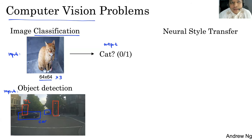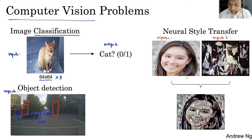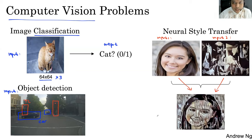Ada juga problem lainnya di computer vision: kita ada sebuah image sebagai input pertama, terus input kedua adalah style-nya. Keduanya digabungkan sehingga kita bisa bikin image dengan style yang ada. Itu adalah neural style transfer. Kalau dalam sequence analysis itu bisa juga untuk generate music, compose music. Jadi ini kira-kira tiga problem yang ada di computer vision: image classification, object detection, dan neural style transfer.